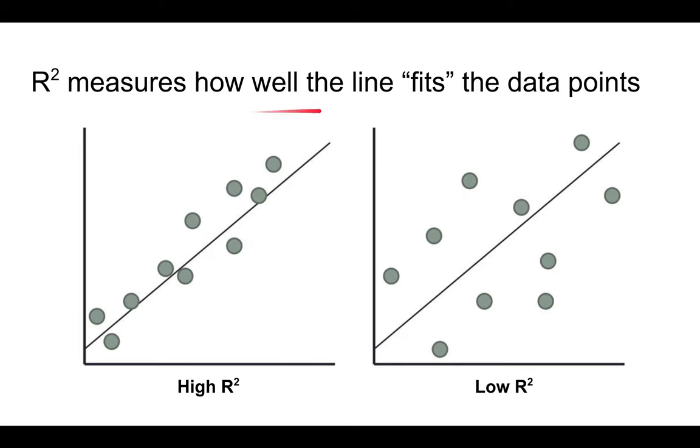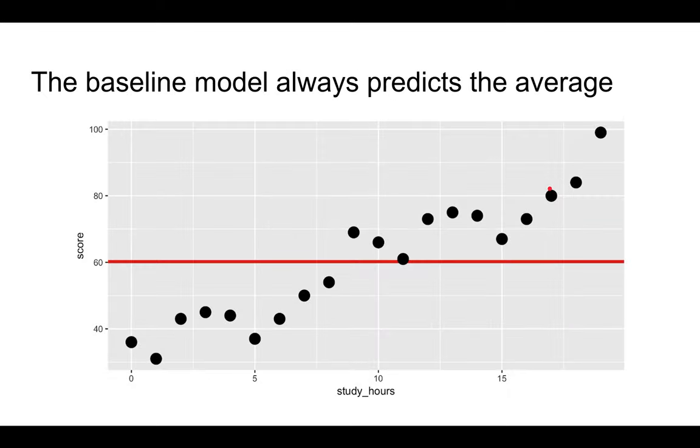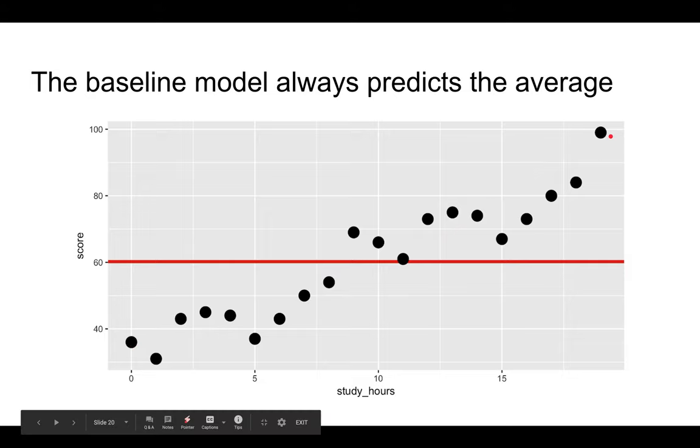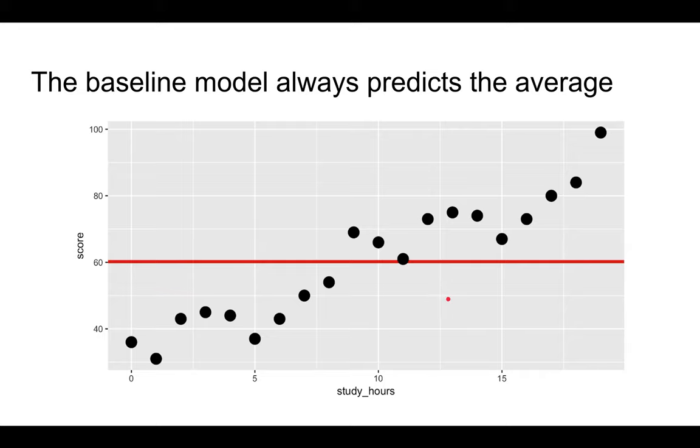The r squared measures how well a line fits the data points. For the figure on the left, the r square will be quite high because the line fits the data points pretty well. But for the figure on the right, the r square will be fairly low because a lot of the dots are pretty far away from the line. So what's the baseline model? The baseline model is basically the average observed value of the response variable. In this case, it would be the average quiz score. If you had to just predict a number without any information, you just predict the average because that's the most obvious simple guess.